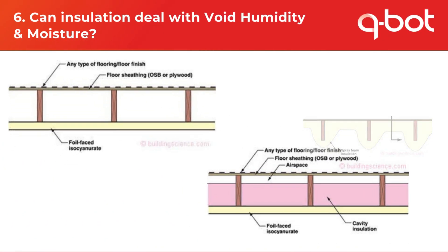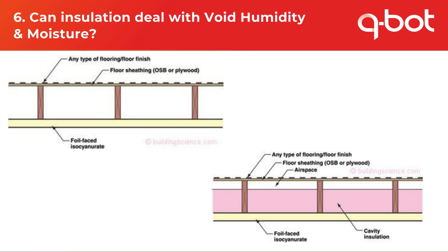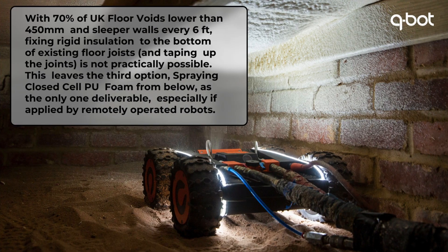The first two options, though not impossible, are tricky and time-consuming, involving fixing rigid insulation to the bottom of existing floor joists. To achieve this, the void needs to be at least six feet in height. However, with 70% of UK floor voids lower than 450mm and sleeper walls every six feet, fixing rigid insulation is not practically possible. This leaves the third option: spraying closed cell polyurethane foam from below as the only deliverable solution, especially if applied by remote-operated robots.